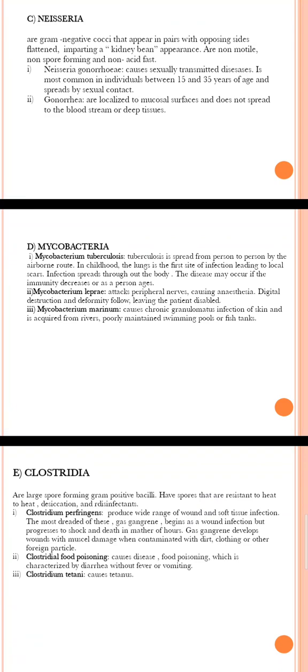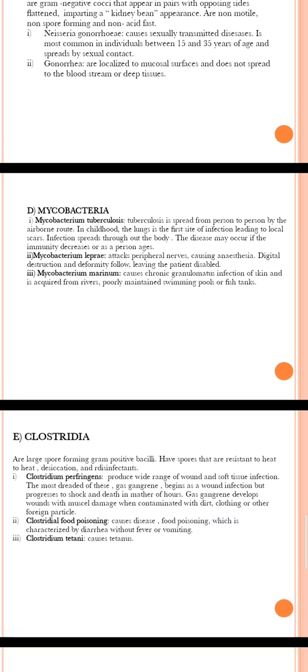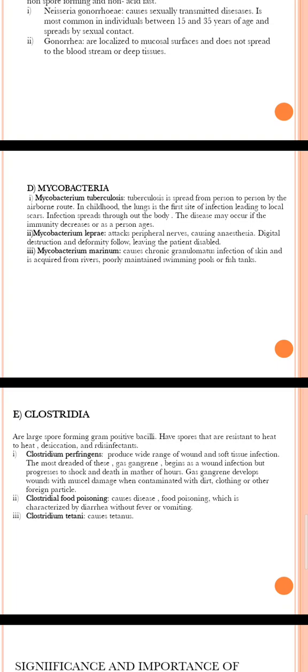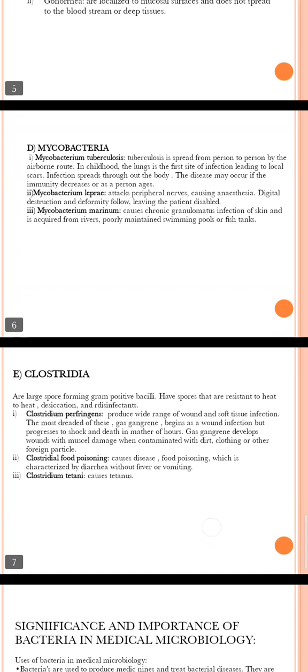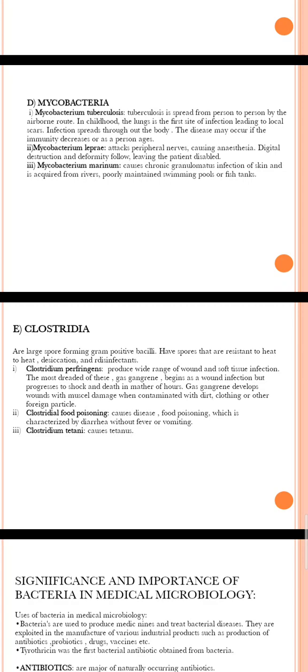The fourth bacteria is Mycobacteria. Mycobacterium tuberculosis spreads from person to person by the airborne route. In childhood, the lungs are the first site of infection leading to local scars, and infection can spread throughout the body. The disease may occur if immunity decreases or as the person ages. Mycobacterium leprae attacks peripheral nerves causing anesthesia, digital destruction, and deformity. Mycobacterium marinum causes chronic granulomatous infection in skin and is acquired from rivers, poorly maintained swimming pools, or fish tanks.